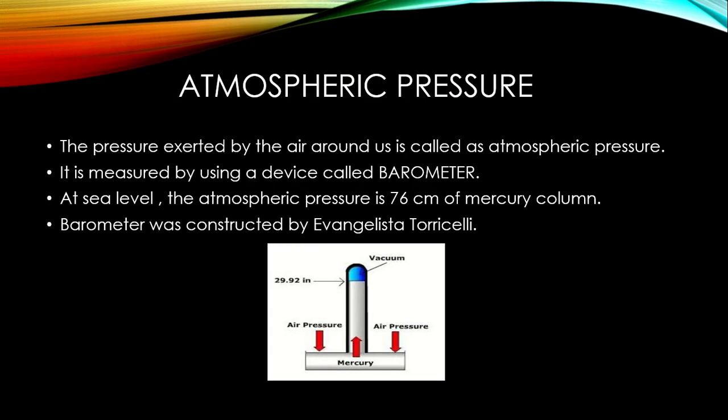Now, atmospheric pressure. The pressure exerted by the air around us is called atmospheric pressure. It is measured using a device called a barometer. At sea level, the atmospheric pressure is 76 cm of mercury column. The barometer was constructed by Evangelista Torricelli for the first time.